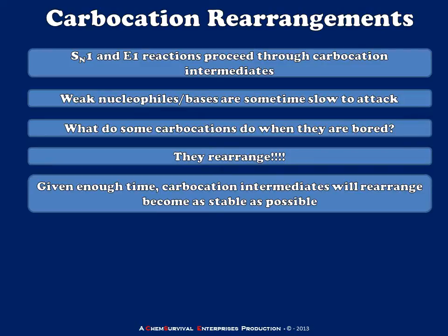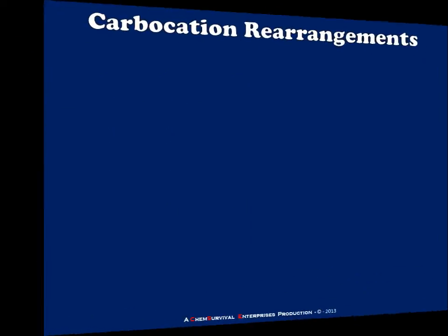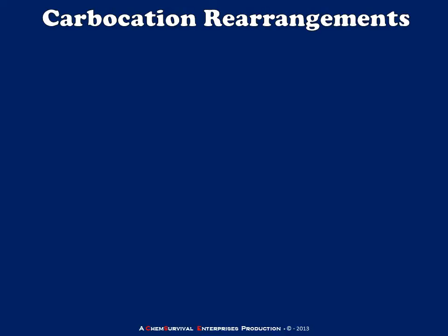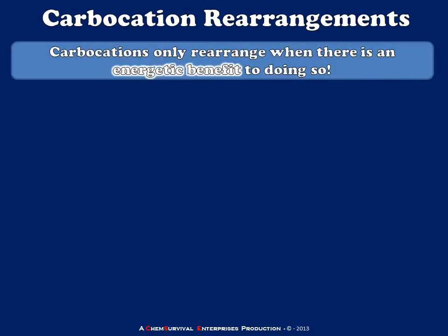So let's talk a little bit about carbocation stability so that we get a good reminder of what drives that. Now that we know carbocations can rearrange, let's think a little more about why. Carbocations will only rearrange when there is an energetic benefit to doing so. There are really two different things I'm going to talk about here, and you can probably think of a few more that might affect it as well, but I'm going to stick to the big ones.